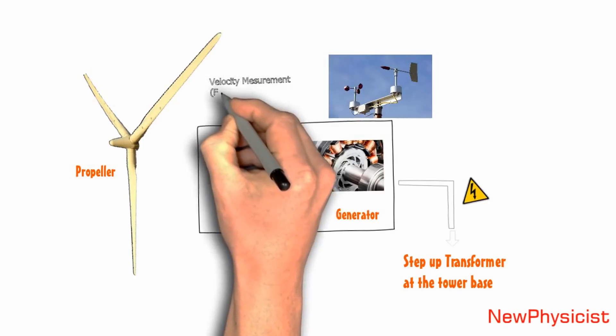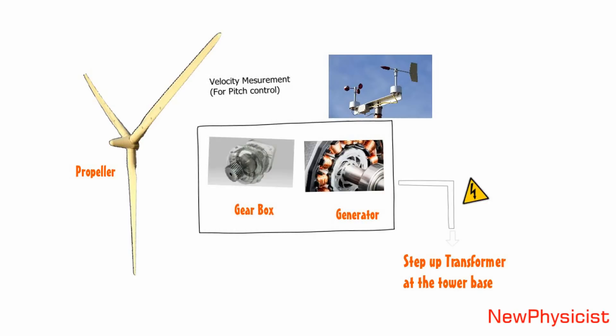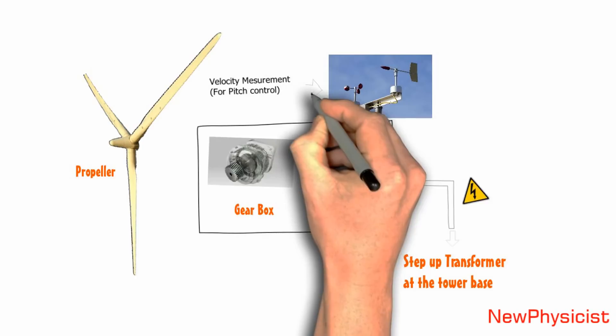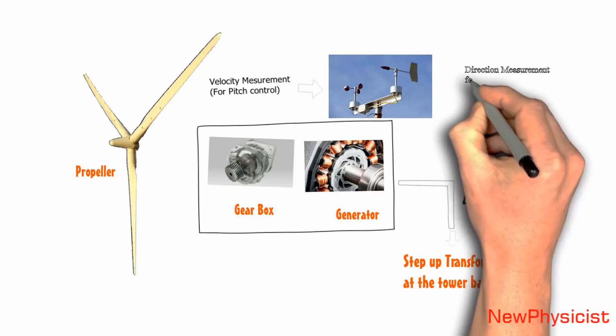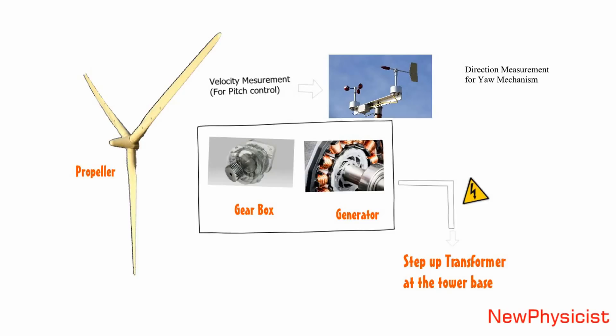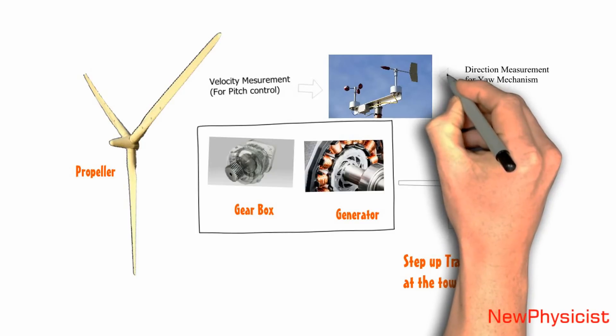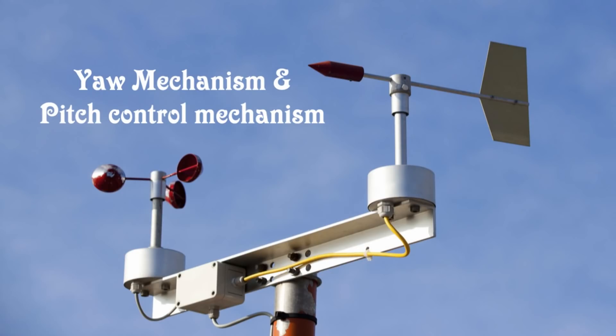Okay, you've learned how a horizontal axis wind turbine works. But there is a catch. Wind direction and wind speed changes over time. This will dramatically affect the wind turbine output. Two mechanisms are used to overcome this difficulty.